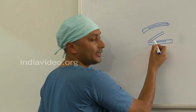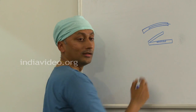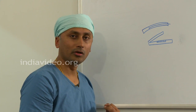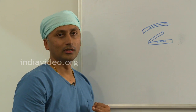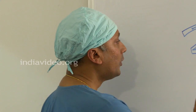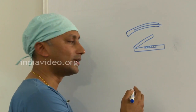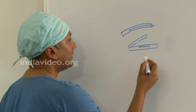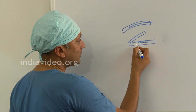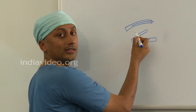This flap can be made either with a blade, which is most common because it is cheaper, or with the latest femtosecond laser, where a laser beam is used to cut the cornea and raise the flap.